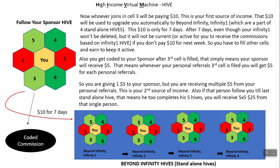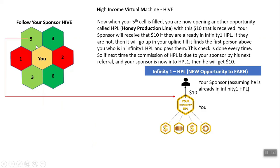Also, if that person follows you till the last standalone hive — meaning they complete all five hives — you will receive $5 multiplied by 5, which is $25, from that single person, because each hive gives you $5 when they fill their own cell number 3. When cell number 5 is filled, you are opening another opportunity called HPL, which stands for Honey Protection Line.